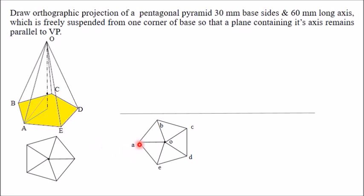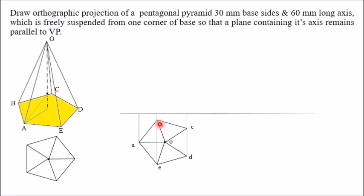Mark all these points. The corners of the base are A, B, C, D, and E, and O is the top vertex. Project all these base points. Since the base is kept on HP, you get them on the XY line. So this point will be A, this will be E, and this will be D. Behind D you get point C, and behind E you get B, because in first-angle projection we look from one side and draw the other. So A, E, D are visible; B and C are invisible. Points A-dash, E-dash, and D-dash are visible, and B-dash and C-dash are not visible.